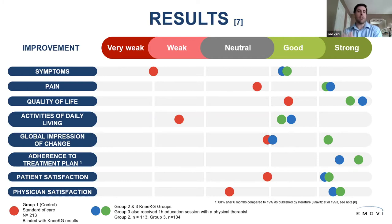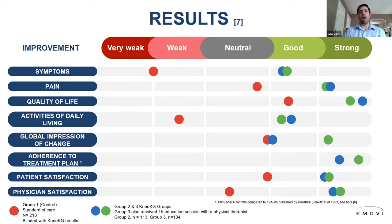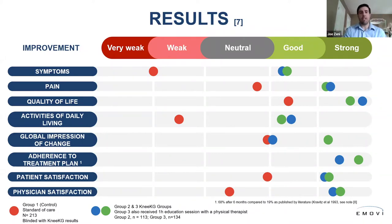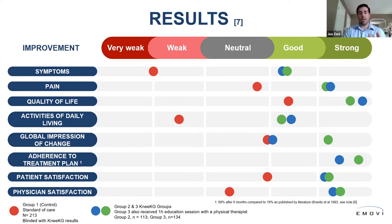In terms of results, the groups that integrated Knee KG into their assessment had much greater outcomes across the board — looking at symptoms, pain, quality of life, ability to participate in daily activities, and satisfaction from both patient and physician perspectives. Understanding biomechanical abnormalities at an individual level and providing personalized rather than one-size-fits-all interventions really improved outcomes. We tend to think patients with knee OA are on a trajectory toward knee replacement, but these results challenge that conventional thinking.